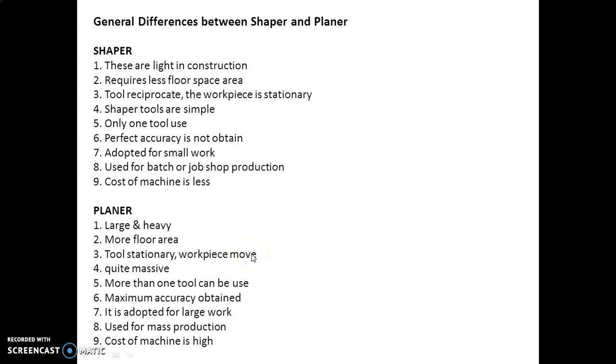These are some general differences between shaper and planer. In shaper, these are lighter in construction, whereas planer machines are larger and heavy. In shaper it requires less floor space area, but in case of planer it requires more floor area.